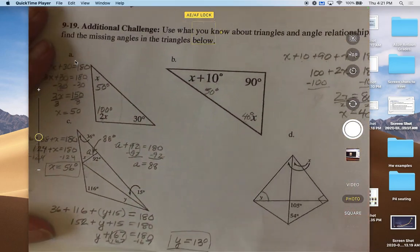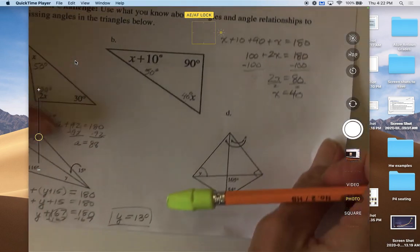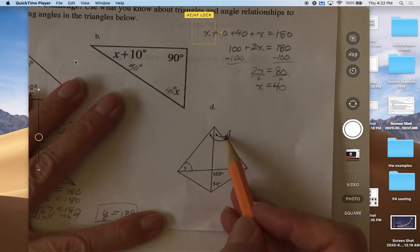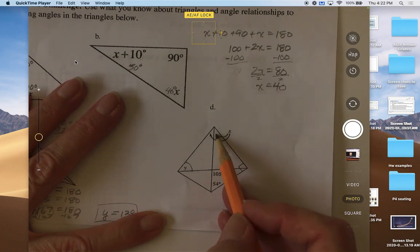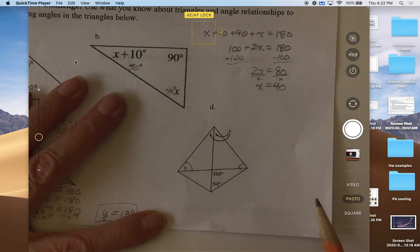Okay, now we're going to do 9-19d, so it's this one down here. What we need to find is x, which is this angle and this angle, so both these angles are the same, they're both x, and then we need to find y down here.